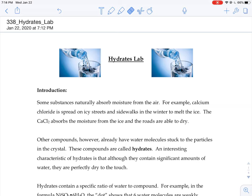The beginning of this lab talks about how there are some chemicals that just naturally absorb moisture from the air. A classic example of that is calcium chloride, that we use on icy streets and sidewalks in the winter to melt the ice. That calcium chloride can absorb the moisture from melted ice. It kind of acts like a sponge. It sucks it up and it's able to keep the roads dry and safer to drive on.